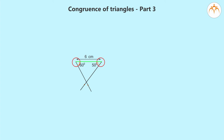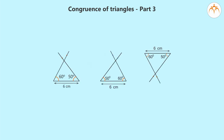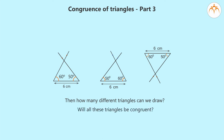We have now got another test of congruence. Since we used two angles and the side between them, we call it the Angle-Side-Angle (ASA) test. Now a question for you: like the earlier example, if we know the measurements of two angles and a side that is not between them, how many different triangles can we draw? Will all these triangles be congruent? To answer this, you should know the rule about the sum of all three angles of a triangle.